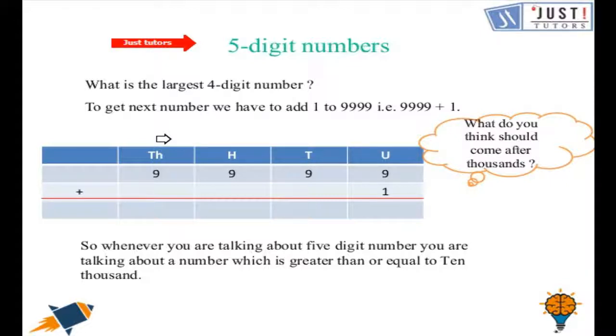To get this number we have to add 1 to 9999. Let us do it here in this place value chart. So as you can see 9999 is already written. We have to add 1 to it. Adding 1 to it we get 10,000.